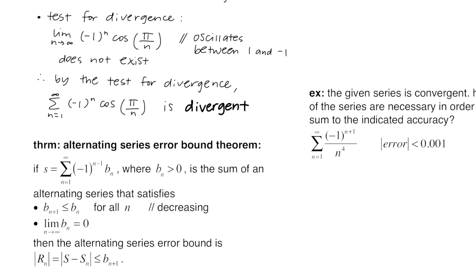Next we have the alternating series error bound theorem. If s equals the sum of an alternating series where b sub n is positive, satisfying the two conditions that b sub n is decreasing and the limit as n goes to infinity of b sub n equals 0, then the alternating series error bound is given by the absolute value of the original series minus the nth partial sum, and this is less than or equal to b sub n plus 1, which is the next term of the alternating series.